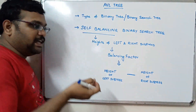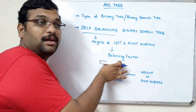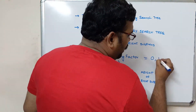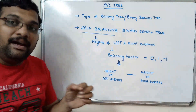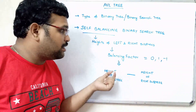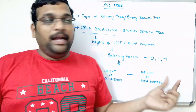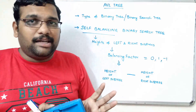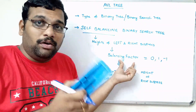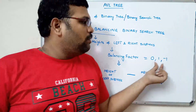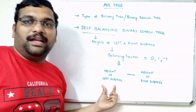The difference of height of left subtree and right subtree gives the balancing factor, which can be either zero, one, or minus one. So every node should satisfy this balancing factor — that means every node must have a balancing factor of either zero, one, or minus one. The AVL tree should satisfy the binary search tree property, and along with that it also satisfies this balancing factor. The balancing factor is the difference between the height of the left subtree and the right subtree.